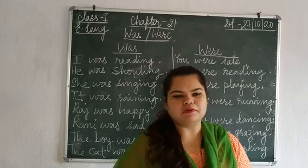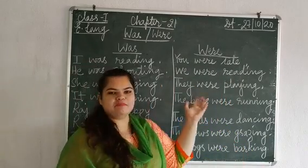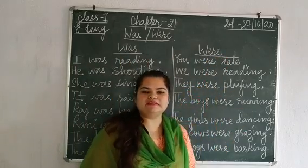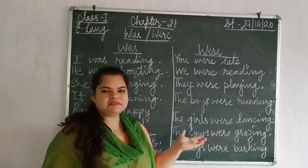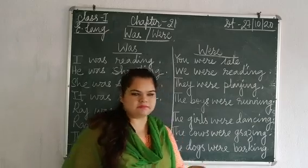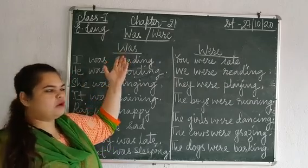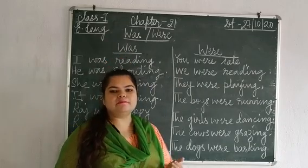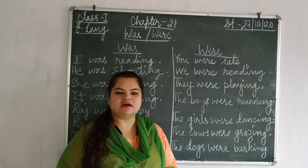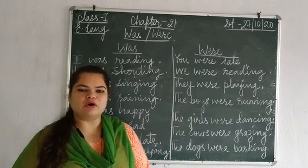So let us have a look at what I have written on the blackboard. I have made two columns: was and were. Below these I have given certain examples through which we can understand how to use these words. Now was and were are used in the past tense form. It shows us that a certain work was done a while ago or some time ago, so it always tells us something that has already happened.